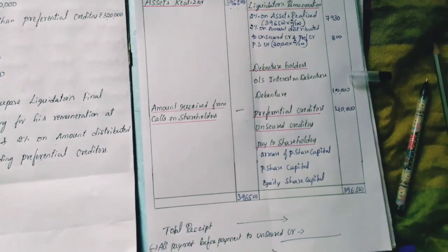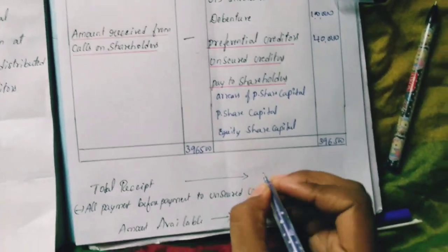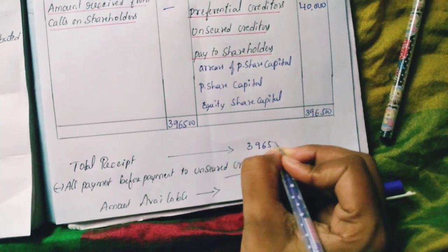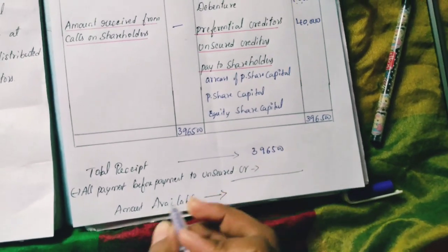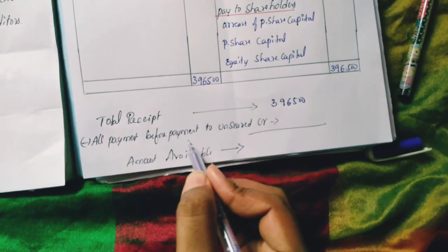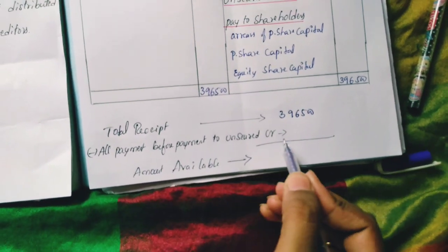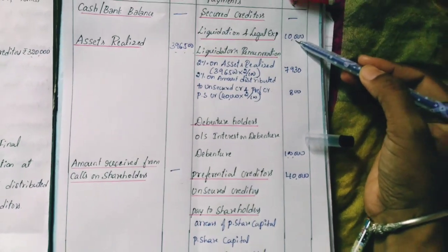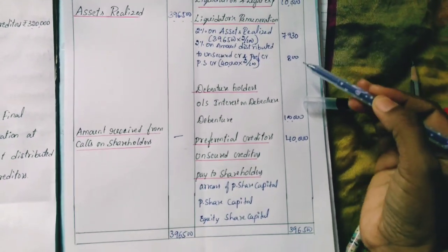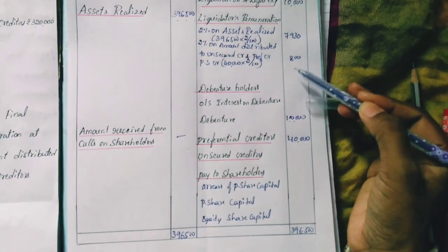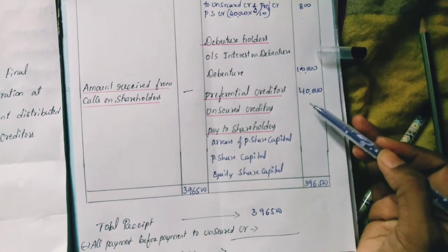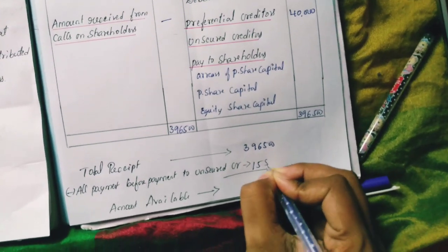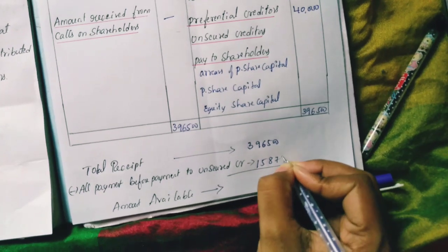Total receipts: Rs.3,96,500. Total payments before unsecured creditors: Rs.10,000 (liquidation expenses) plus Rs.7,930 (remuneration on assets realized) plus Rs.800 plus Rs.1,000 plus Rs.40,000 (preferential creditors). Total so far: Rs.1,58,730 approximately.